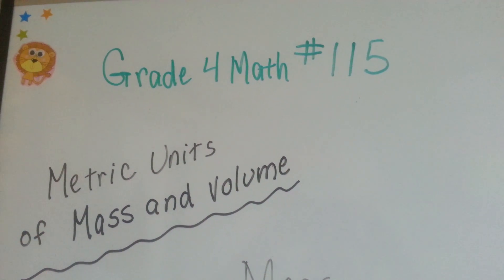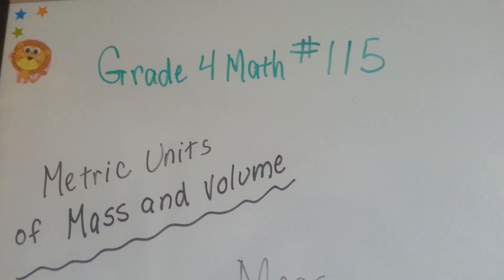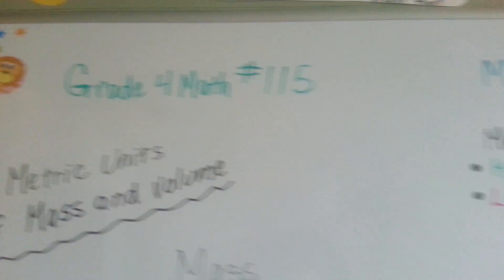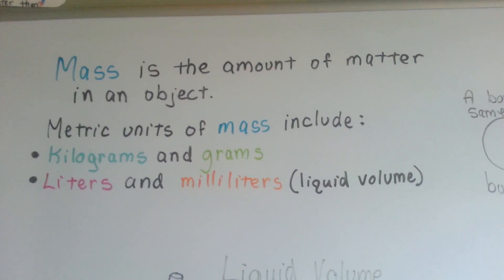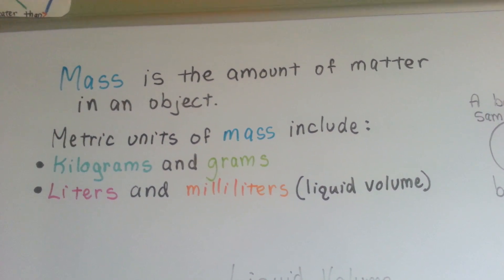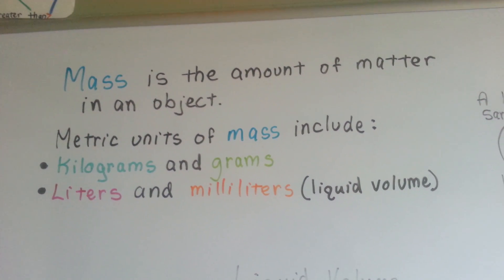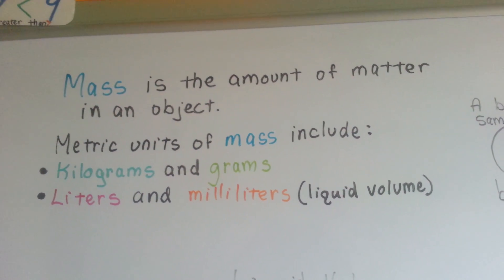Grade 4 math number 115, metric units of mass and volume. Mass is the amount of matter in an object. Metric units of mass include kilograms and grams. Liters and milliliters are liquid volume.